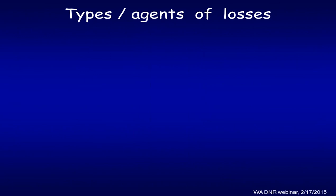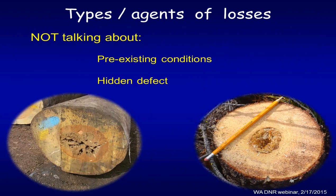One thing to mention: in this presentation I'm basically talking about standing trees and not downed woody debris, which has a whole different timeline of decomposition. Also, I'm not talking about any pre-existing conditions or hidden defects. Knowing something about your stand conditions prior to death is helpful — was there a lot of heart rot or root rot on that site? The deterioration and decay you see as a result of fire and insect generally works from the bark inward toward the pith.